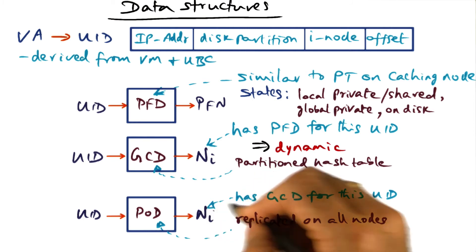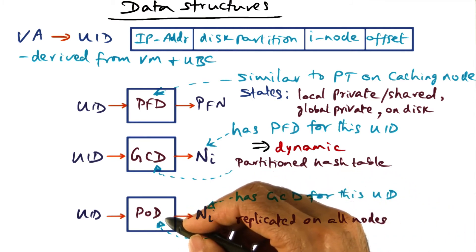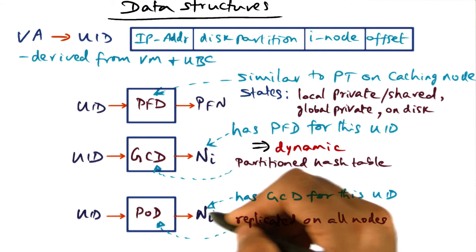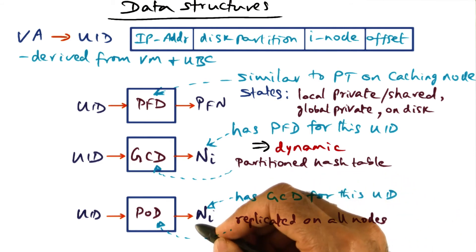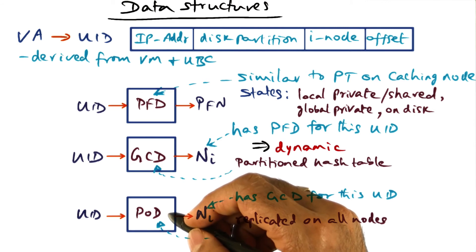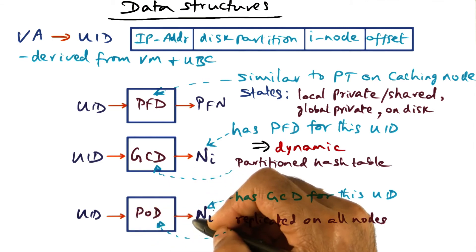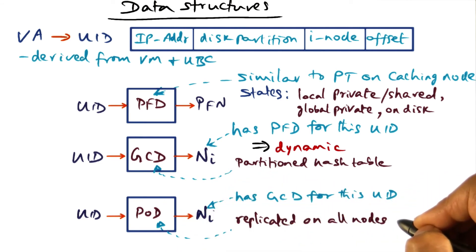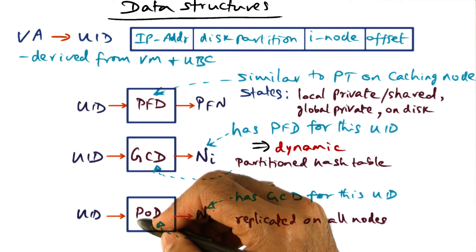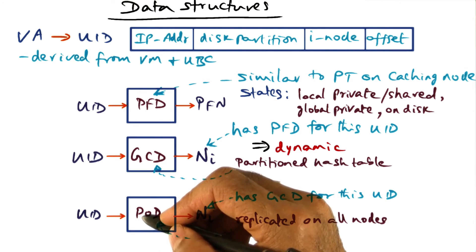And if that happens, then we have to replicate again. We have to redistribute the page ownership directory. But this is not something that's going to happen too often. It's very rare that a node is going to come down, or a new node is going to be inserted into a LAN. And therefore this page ownership directory does not change very often. And that's why it's a replicated data structure that you can believe at every node. But if it changes, there is also a way of handling that.